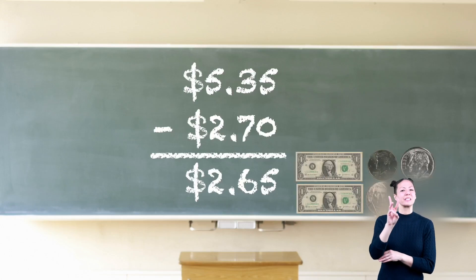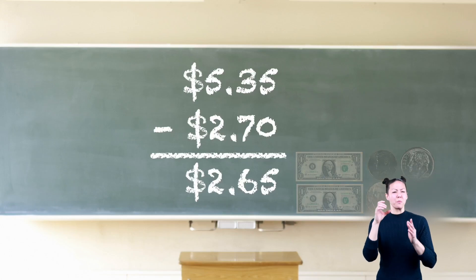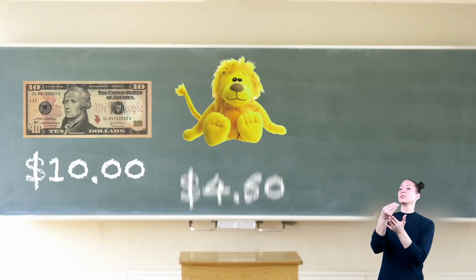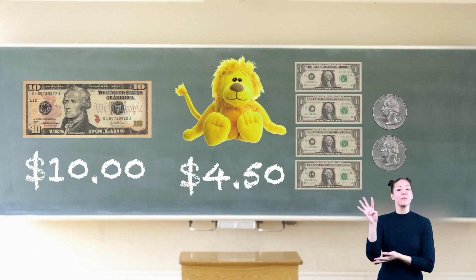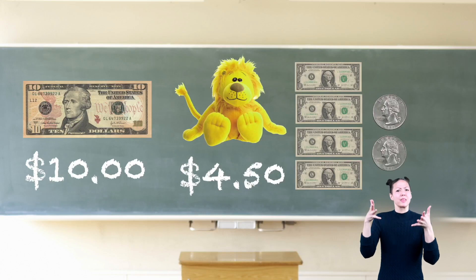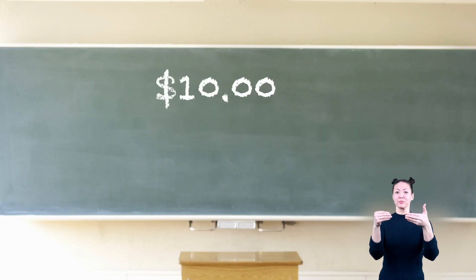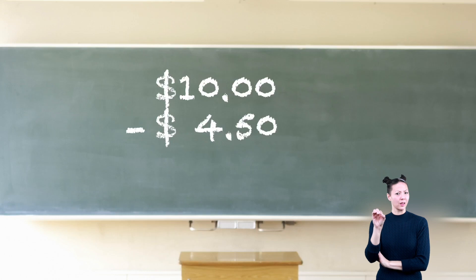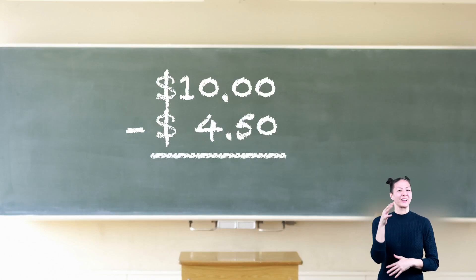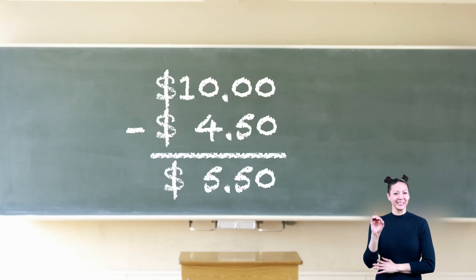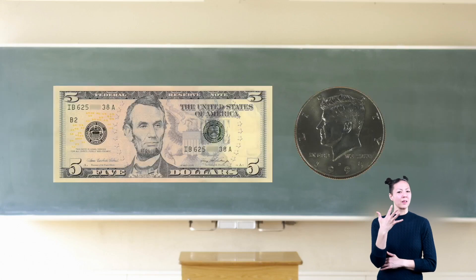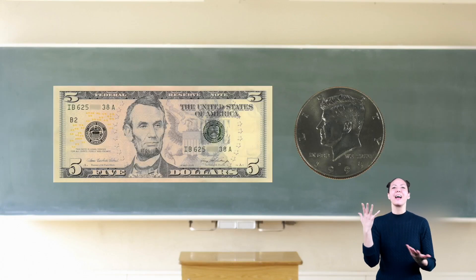Let's look at another problem. If we have ten dollars and purchase a stuffed animal for four dollars and fifty cents, how much money do we have left? Let's see. 10.00 minus 4.50 equals 5.50, or five dollars and fifty cents. And there you have it.